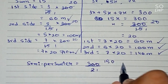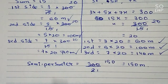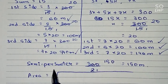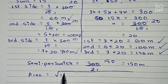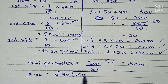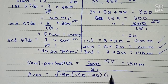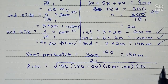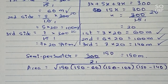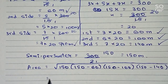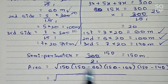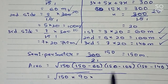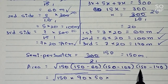Using Heron's formula we can find the area. Area equals root over s(s−a)(s−b)(s−c), where s is the semi-perimeter 150. So it becomes root of 150 multiplied by (150−60) multiplied by (150−100) multiplied by (150−140), which equals root of 150 × 90 × 50 × 10.